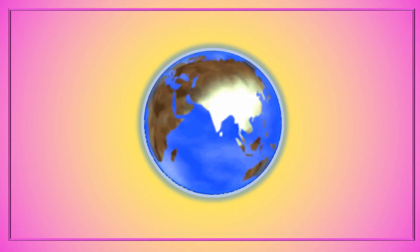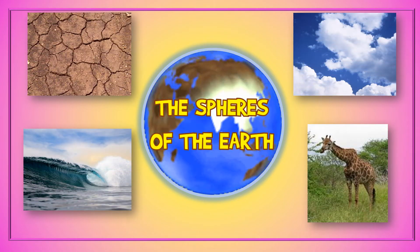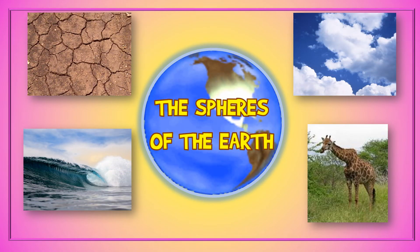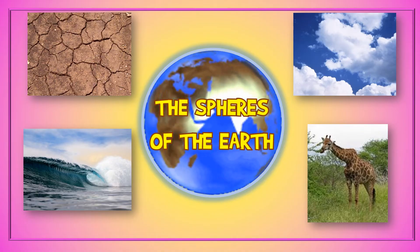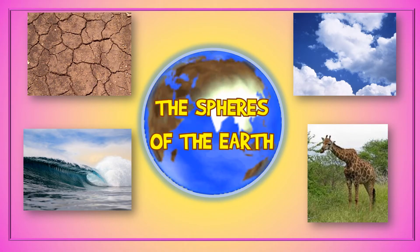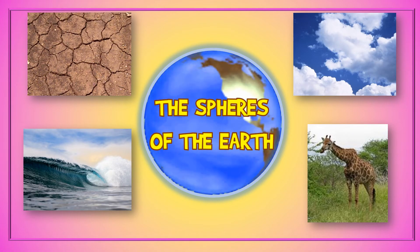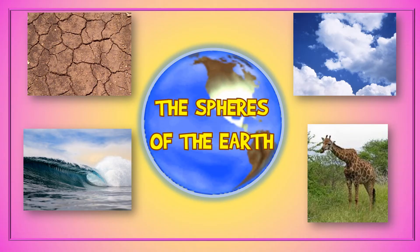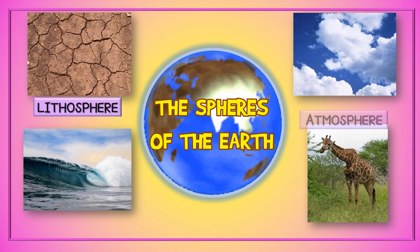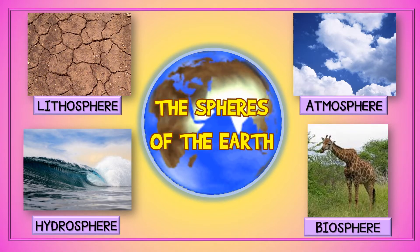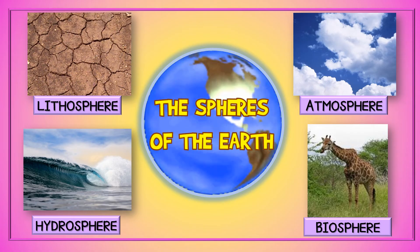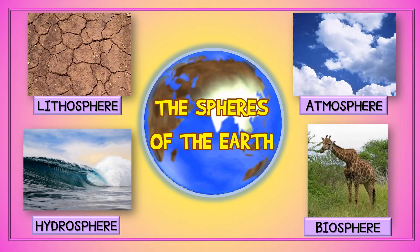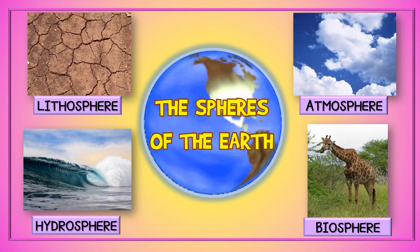Scientists say that the Earth is divided into four spheres. A sphere is an area or region. The four spheres of the Earth are the lithosphere, the atmosphere, the hydrosphere, and the biosphere. In this lesson, we will discover what the four spheres are.